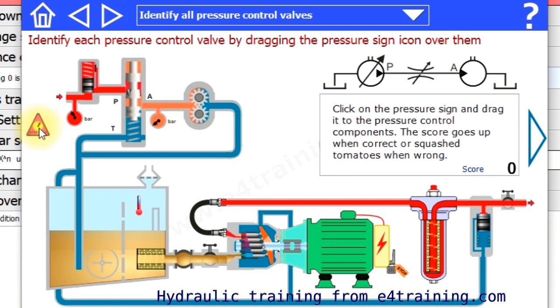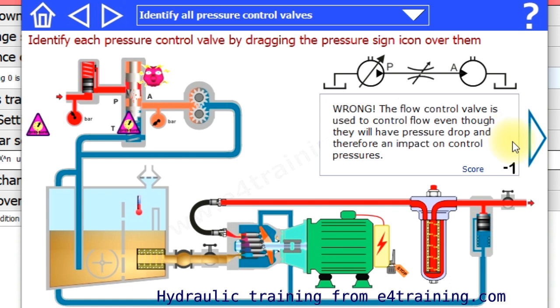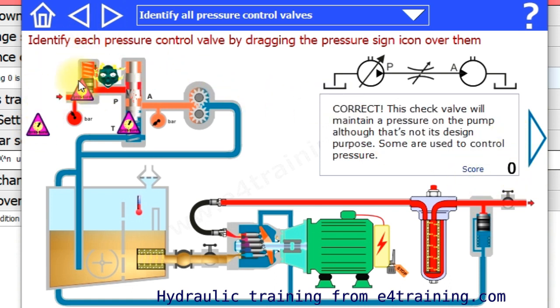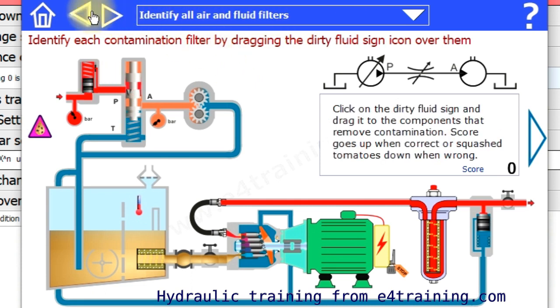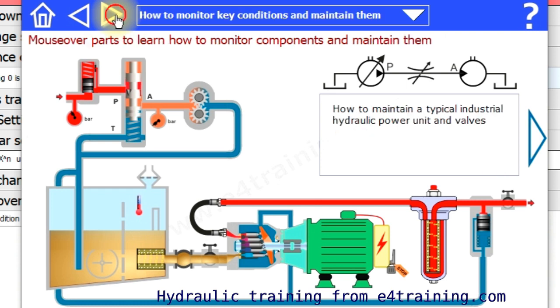The next section gets a little bit more complicated. Now you need to identify the pressure control valves. If you get it wrong you get a negative score. If you get it right you can control the pressure of those valves so it gives you a plus score. We've got identifying flow control valves and identifying filters as well.